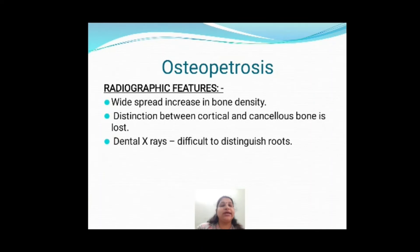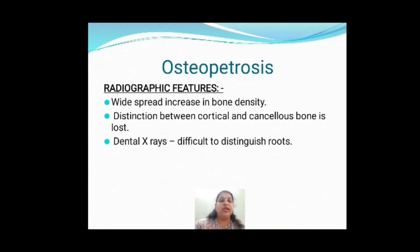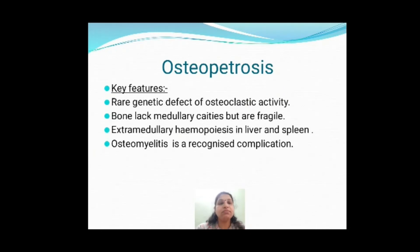Radiographically, there is widespread increase in bone density. Because of this widespread increase, the distinction between cortical bone and cancellous bone will be lost. On IOPA or dental X-ray, you cannot differentiate between roots or the alveolar socket — everything will appear the same. Key features of osteopetrosis: rare genetic defect, no medullary space, and therefore extra-medullary hematopoiesis in liver and spleen.